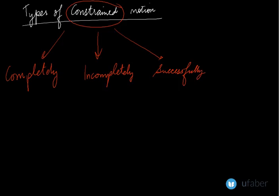Now what is the difference between these three types of constrained motion? Let us start with completely constrained motion. In this, the motion between the two elements of a mechanism is in a definite direction and is independent of the direction of force applied.